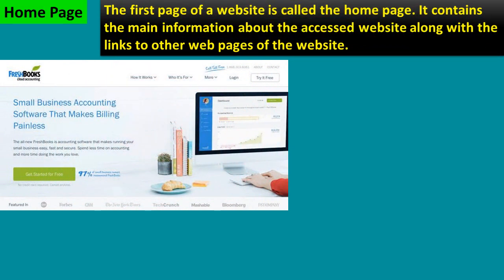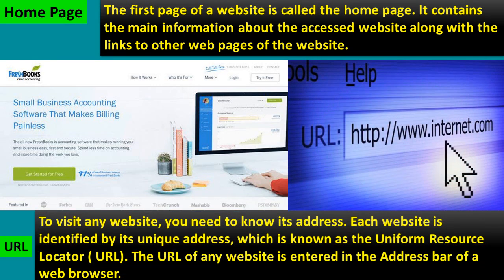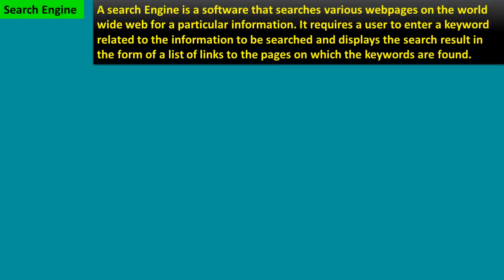Home page: the first page of a website is called the home page. It contains the main information about the website along with the links to other web pages of the website. URL: to visit any website you need to know its address. Each website is identified by its unique address which is known as the Uniform Resource Locator, or URL.